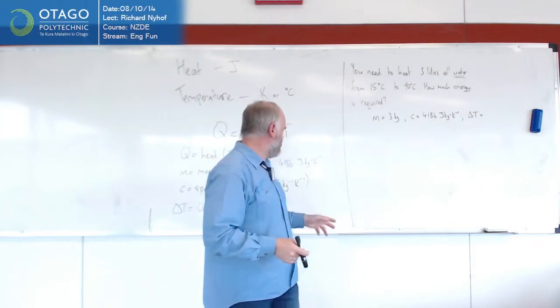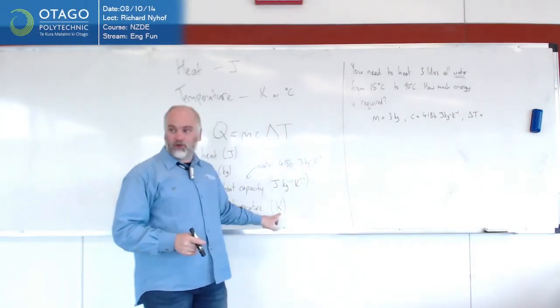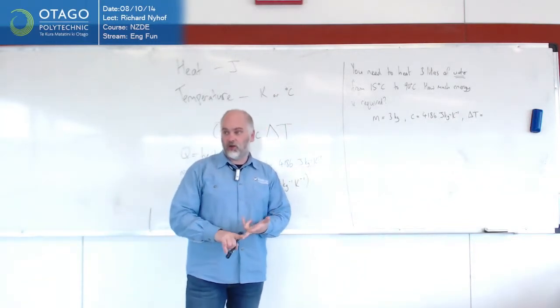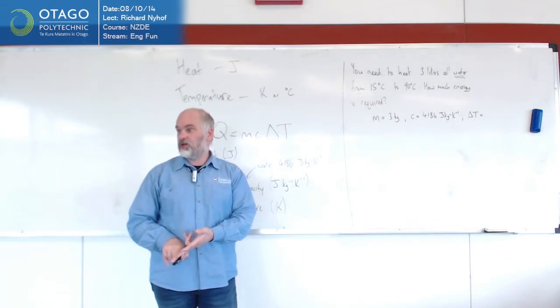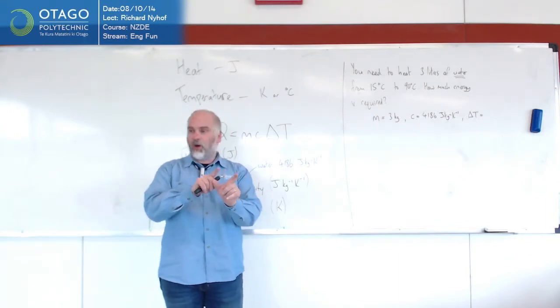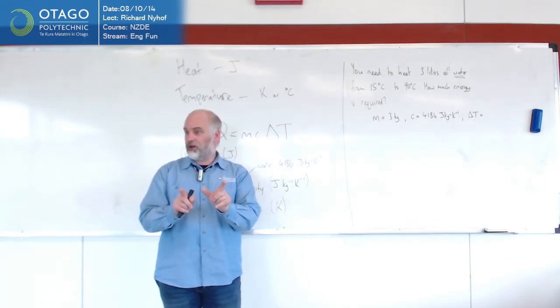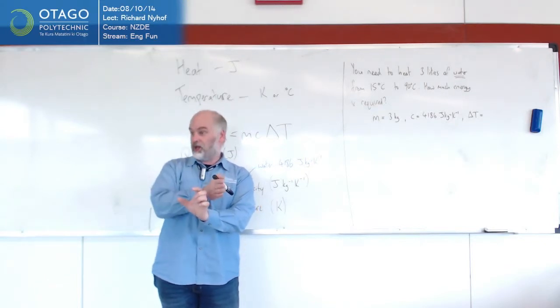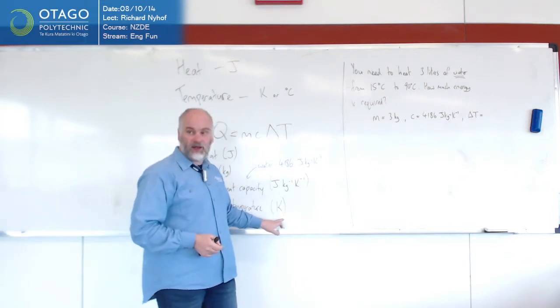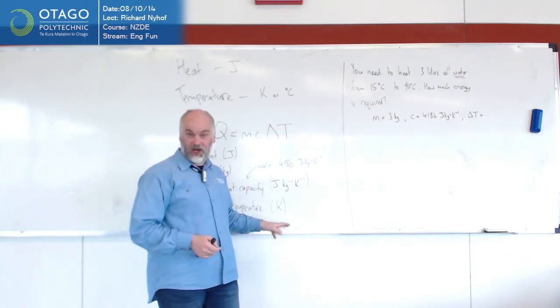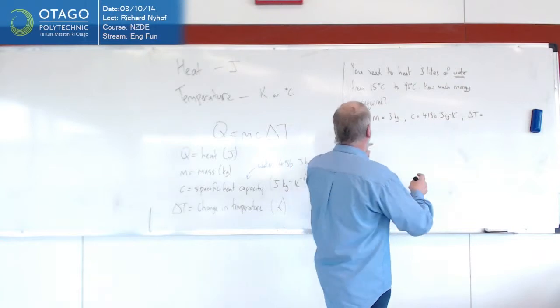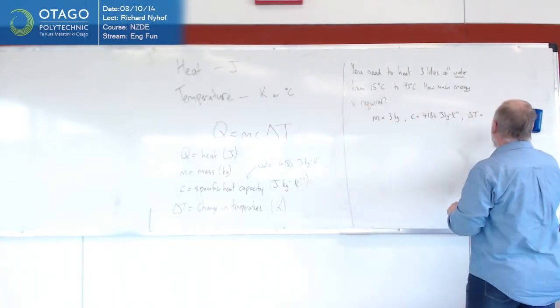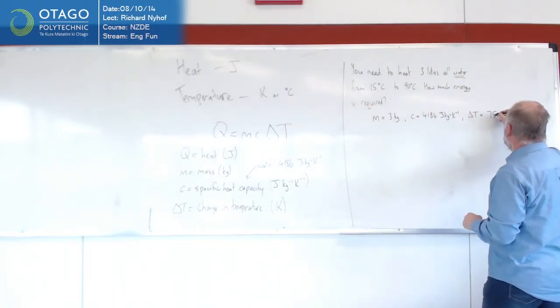The other thing we need is a change in temperature. Even though it says Kelvin, if you're doing a change, you can get away with using Celsius, because if you increase by one Celsius it's the same as increasing by one Kelvin. The size of the units is the same, it's just the starting point is different. So in this case, you can get away with using Celsius because it's a change. The change in temperature is 90 minus 15, so it's going up by 75.